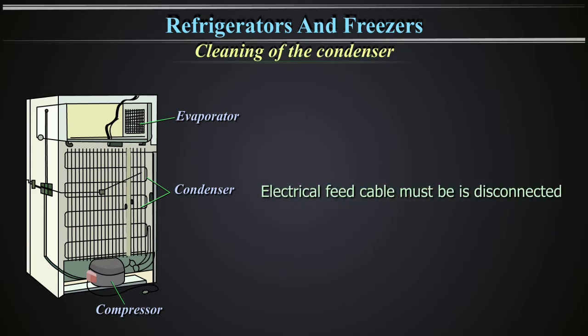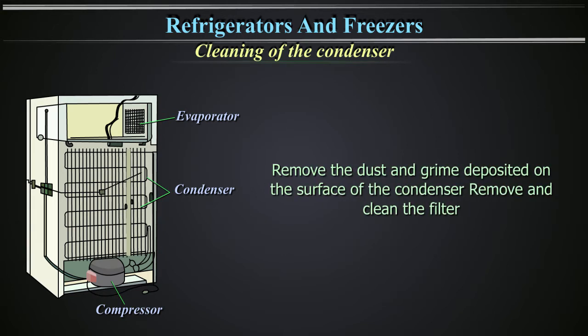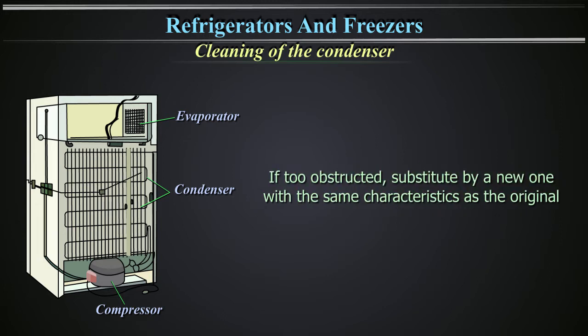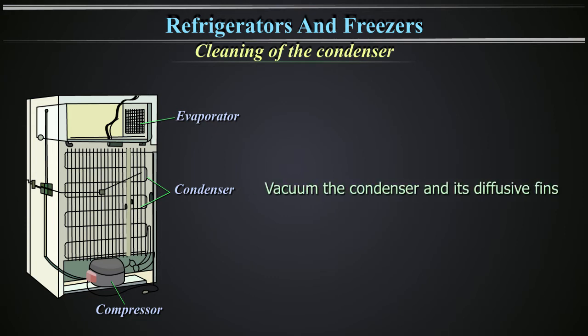For condenser cleaning: disconnect the electrical feed cable and remove the protective grid. Remove the dust and grime deposited on the surface of the condenser. Remove and clean the filter; if too obstructed, substitute it with a new one with the same characteristics as the original. Verify the functioning of the ventilator and vacuum the condenser and its diffusive fins. Reinstall the protective grid and the filter.